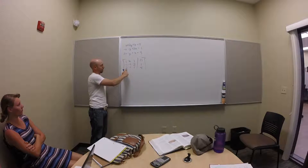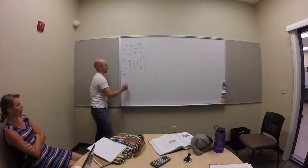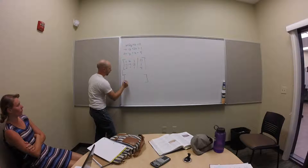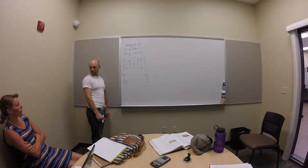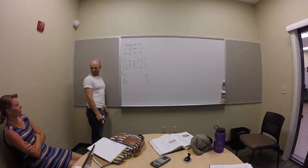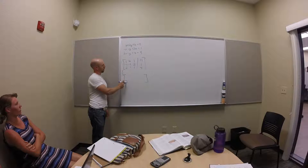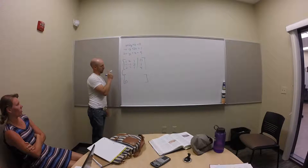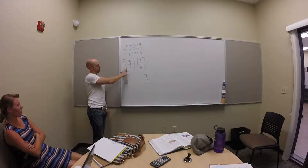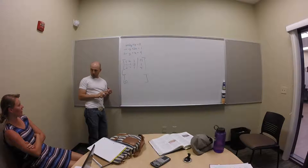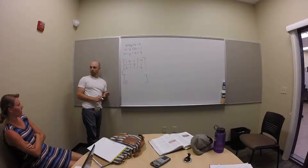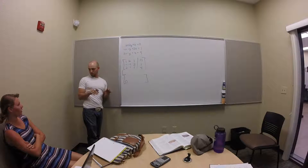So I want to get rid of this 2. The first thing I'm going to do — show me how to get a zero there. The things I'm allowed to do: I'm allowed to multiply rows through by something, I'm allowed to add rows together, and I'm allowed to swap the positions of rows. That's all you're really allowed to do.